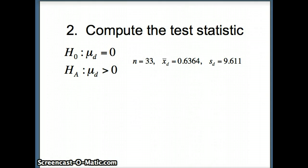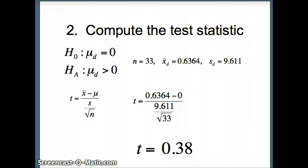So here's the numbers that we have. Our statistics, we had 33 numbers, 33 differences. The average of those differences was 0.6364, and the standard deviation of those differences was 9.611. We're going to compute our test statistic. X bar will be 0.6364, mu will be 0, s will be 9.611, and n will be 33. And plugging those numbers in, we get a test statistic of 0.38, which is a very small test statistic. So we're going to be shading to the right of the test statistic, and we'll have to see how much area we have there, but we're not feeling too good about our chances because the test statistic is so small.